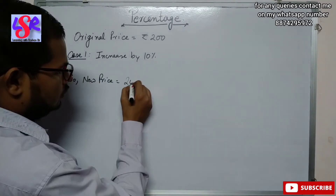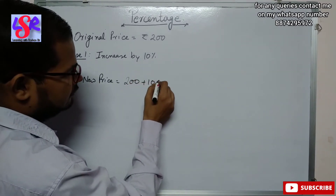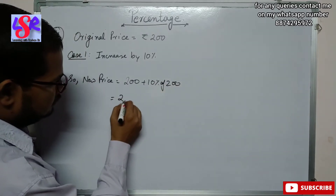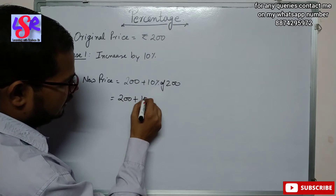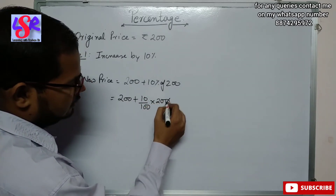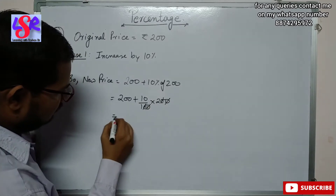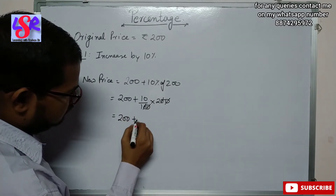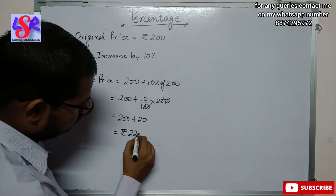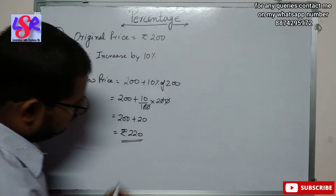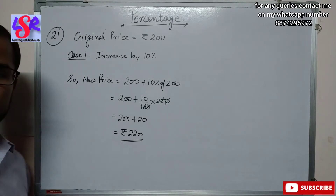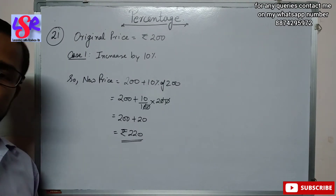So the new price is 200 plus 10 percent of 200. This will be 200 plus 10 upon 100 into 200. The zeros cancel out and we will be having 200 plus 20. That is rupees 220. Now after this we move to the second case in which we are going to decrease the price by 10 percent.